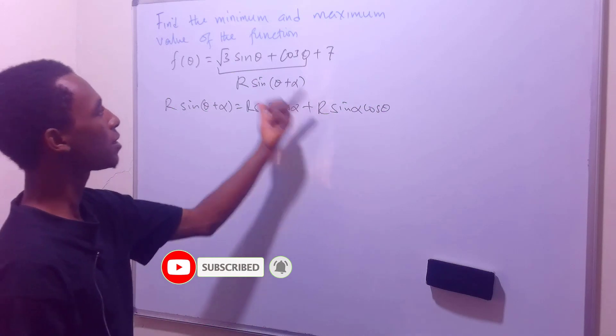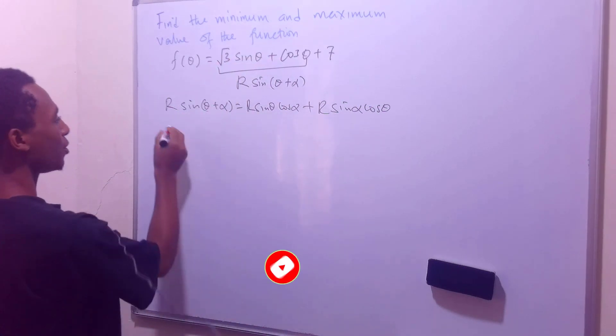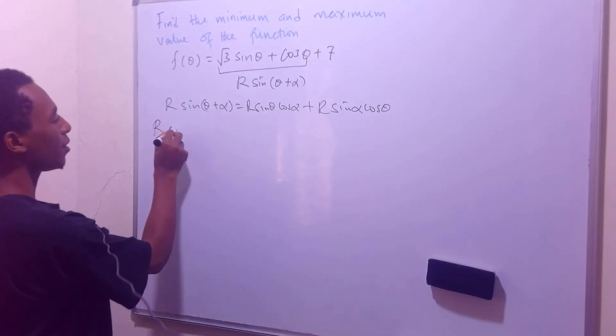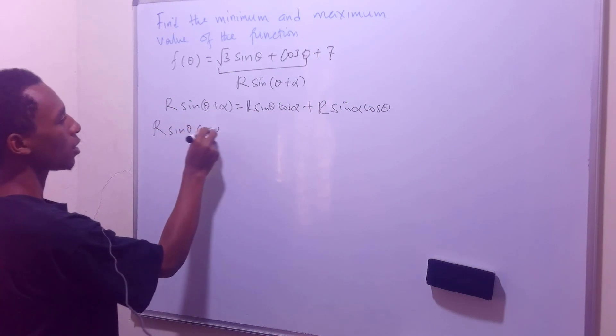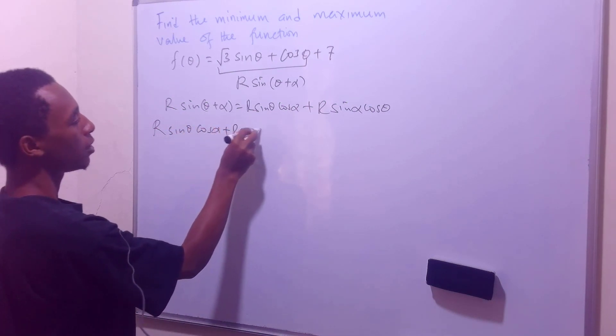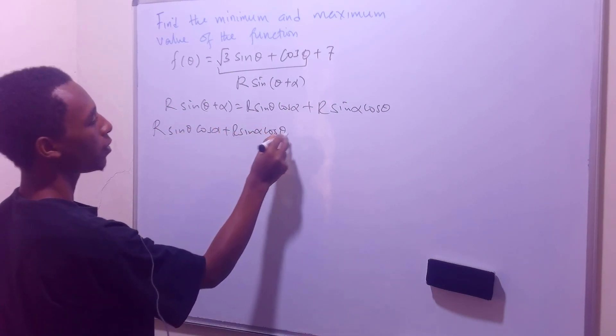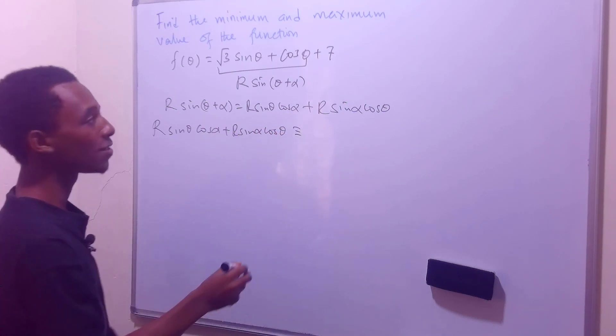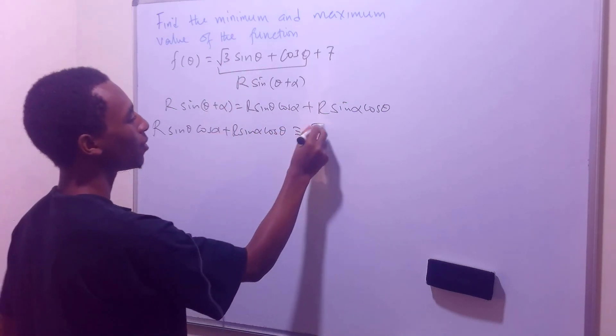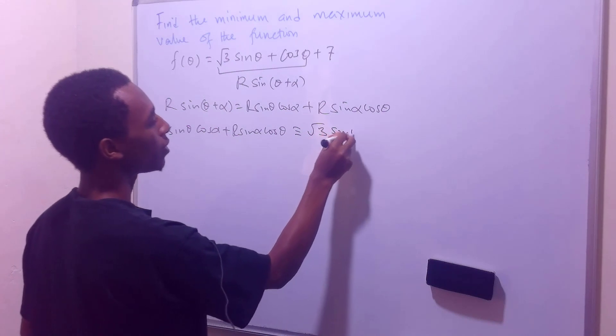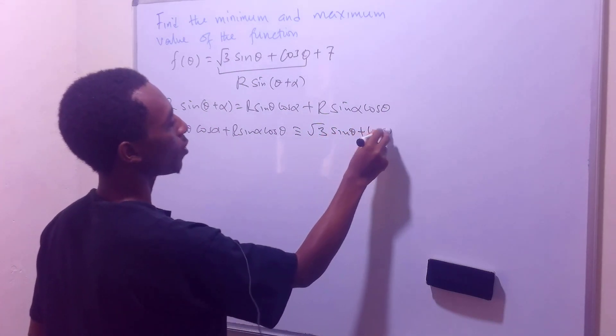So if I just get this and I equate it to this, I'll show you what that is. So we have r sin(θ) cos(α) + r sin(α) cos(θ). I'll just make this to be equivalent to this. So that's √3 sin(θ) + cos(θ).